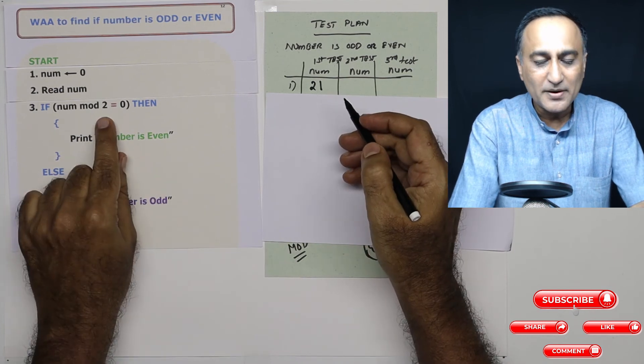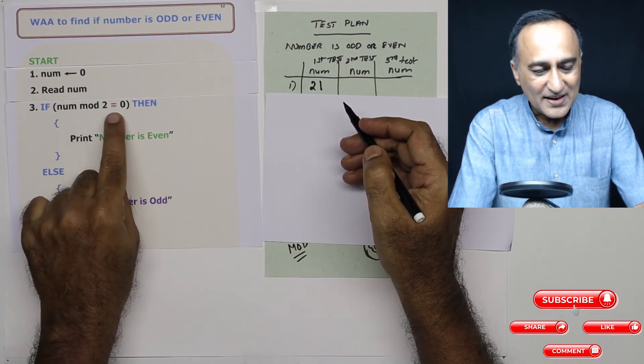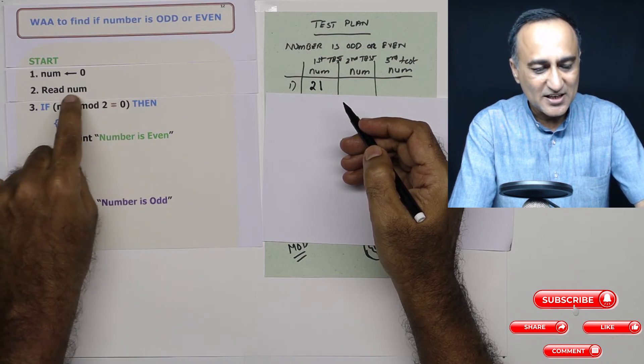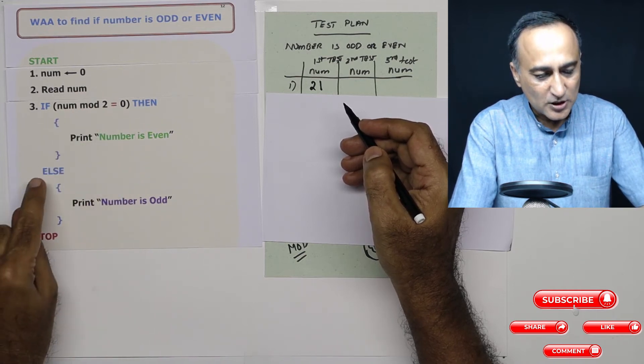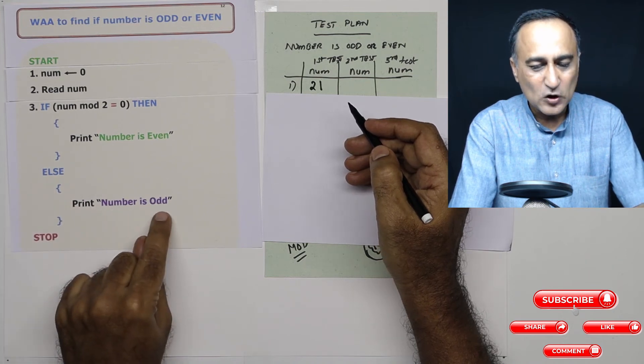So if I divide 21 by two, the remainder happens to be one. So one is not equal to zero. So this condition is false or no. So I will automatically come to the else and print the message number is odd.